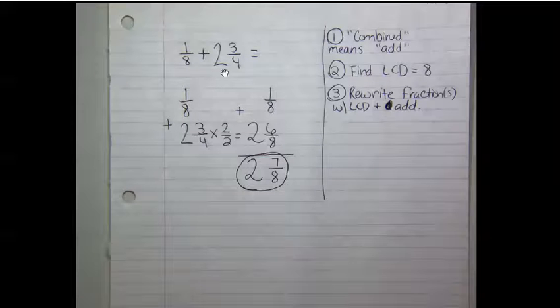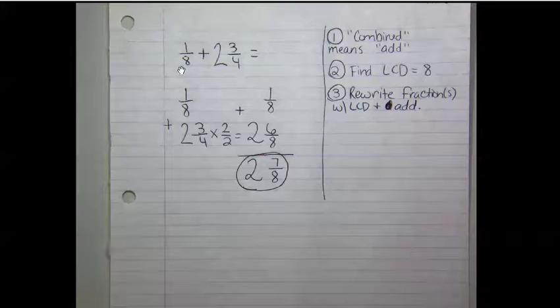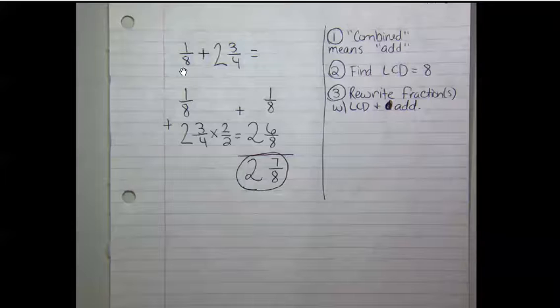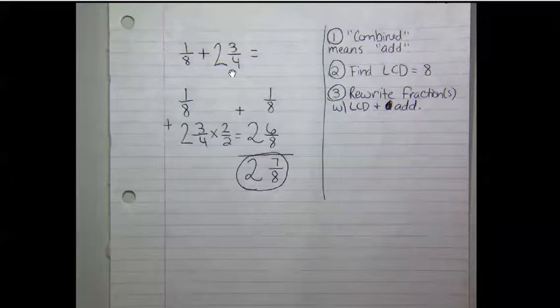And then the next thing we need to do is with one-eighth and two and three-fourths, they have unlike denominators. So I need to find the least common denominator for four and eight, which is eight. And so the one-eighth I'm going to leave alone, but the two and three-fourths, I need to rewrite it so that it's in eighths.